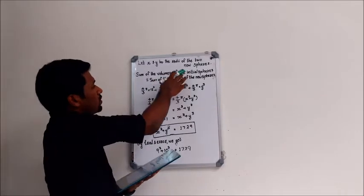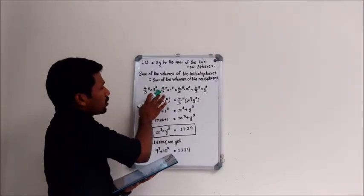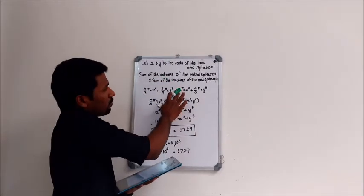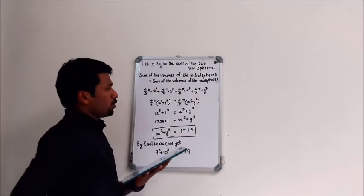So sum of volume of initial spheres will be 4/3 π × 12³ + 4/3 π × 1³. And sum of volume of new spheres will be 4/3 π × X³ + 4/3 π × Y³.